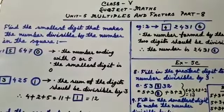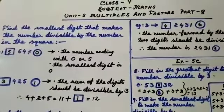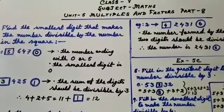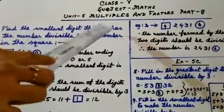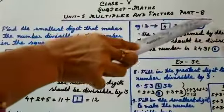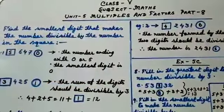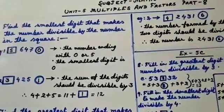Om Namah Shivaya students. Today you will learn the next part of Unit 5, Multiples and Factors, Part 8 of your Junior Maths Book 5.